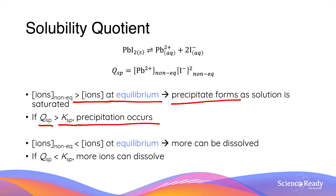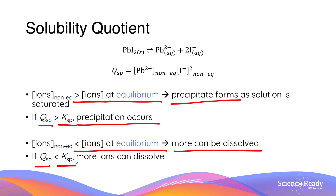Conversely, if ion concentrations are less than the concentrations at equilibrium, a solution has not reached a saturated state, so more ions can dissolve without producing a precipitate. So if the calculated Q value — the quotient — is less than the Ksp of an ionic compound, precipitation does not occur as more ions can still dissolve.